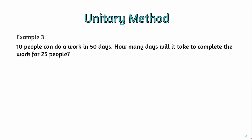Now the next example: 10 people can do a piece of work in 50 days. How many days will it take to complete the work for 25 people? When the number of people increases, the number of days decreases. So when the number of people is 25, the number of days will go down accordingly.